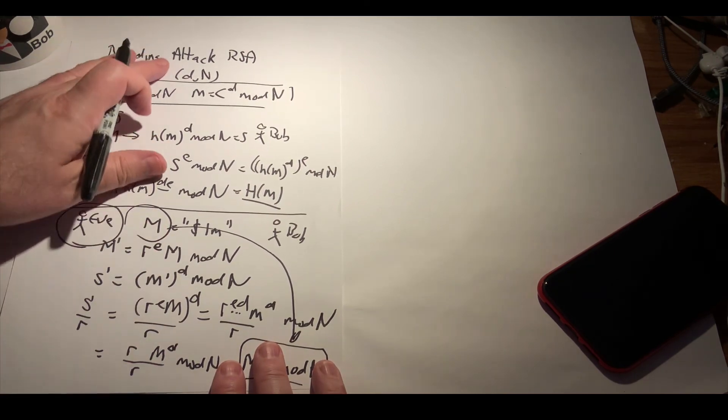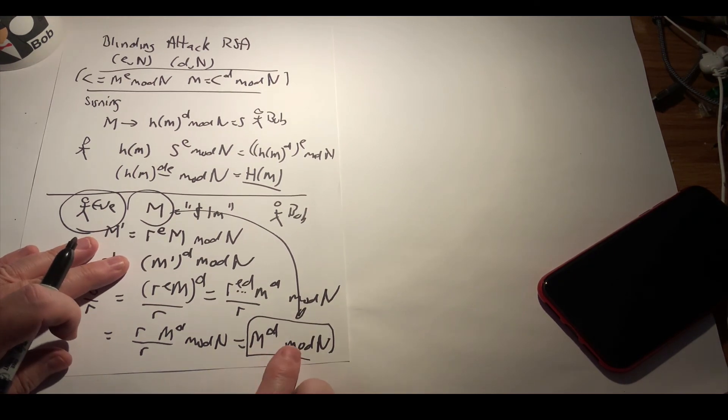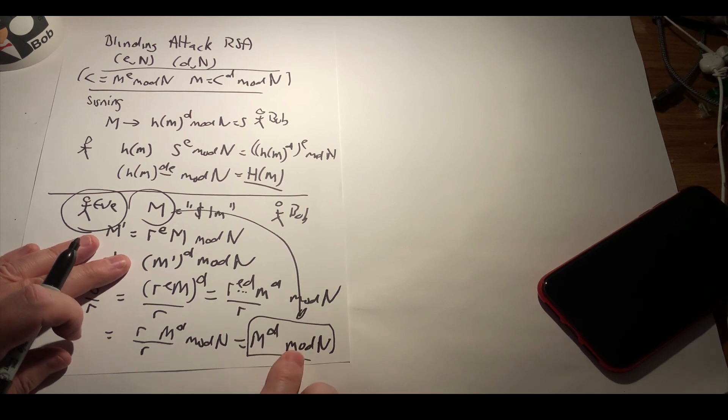So this is an example of the blinding attack for RSA.